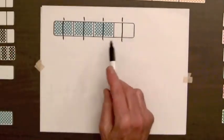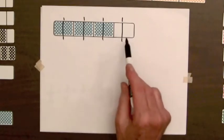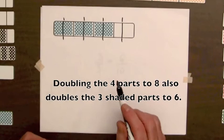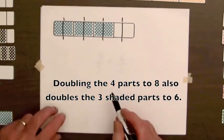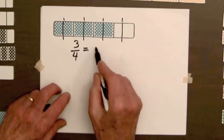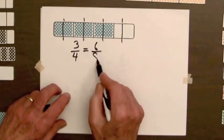We now have eight parts, eight equal parts, so we've doubled the number of parts. We've also doubled the number of shaded parts from three to six. Since we haven't increased the shading any, the original fraction three-fourths is equal to six-eighths.